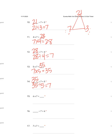Six times seven is forty-two. Seven times six equals forty-two. Forty-two divided by seven equals six. Forty-two divided by six equals seven.